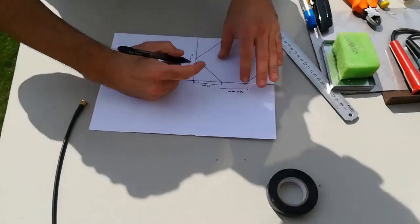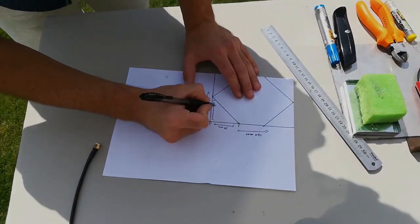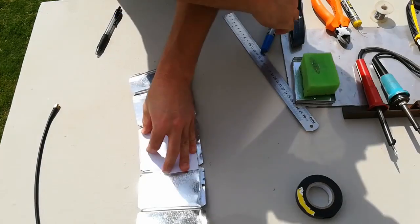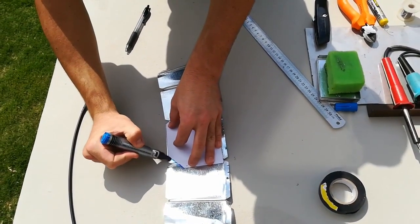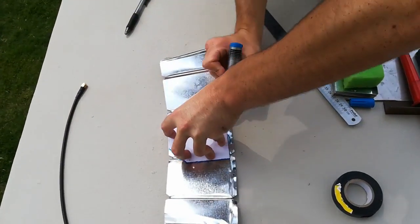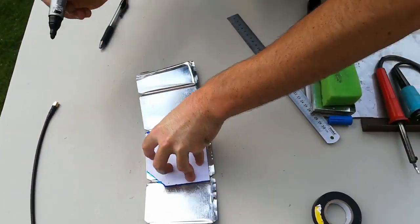Once you've constructed the template, cut it out and place it on the material you'll be using for the antenna. Trace around the template with a marker so that its shape can be cut accurately. Alternatively, you could just draw the shape directly onto the material without actually using the template. Once you have traced the shape of the antenna onto the material, you can begin cutting it out.